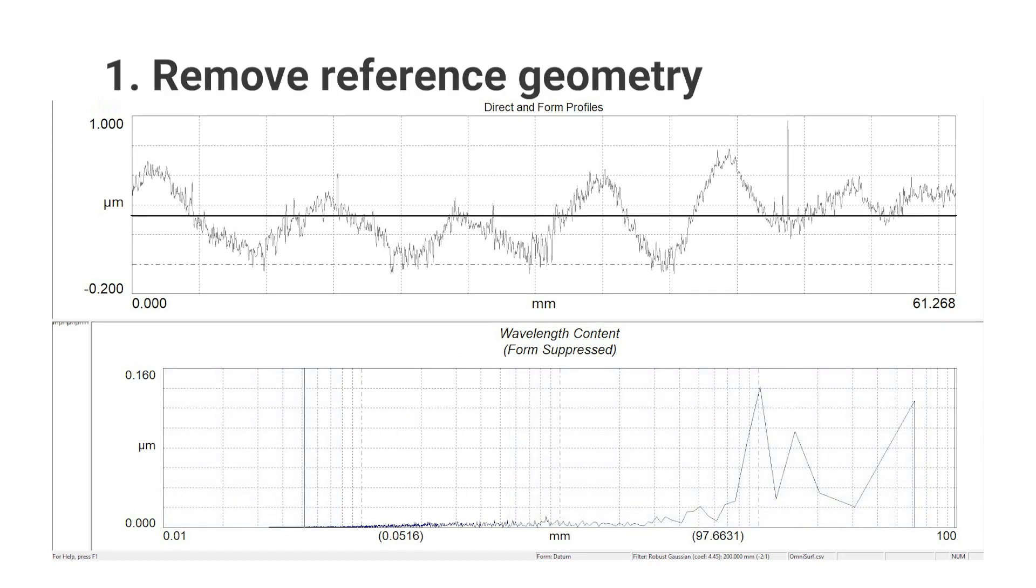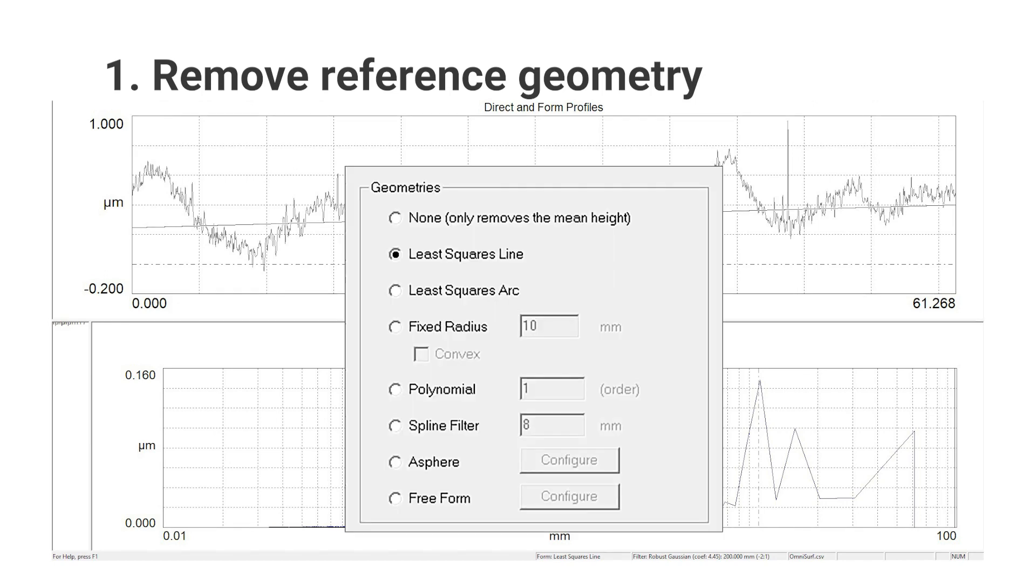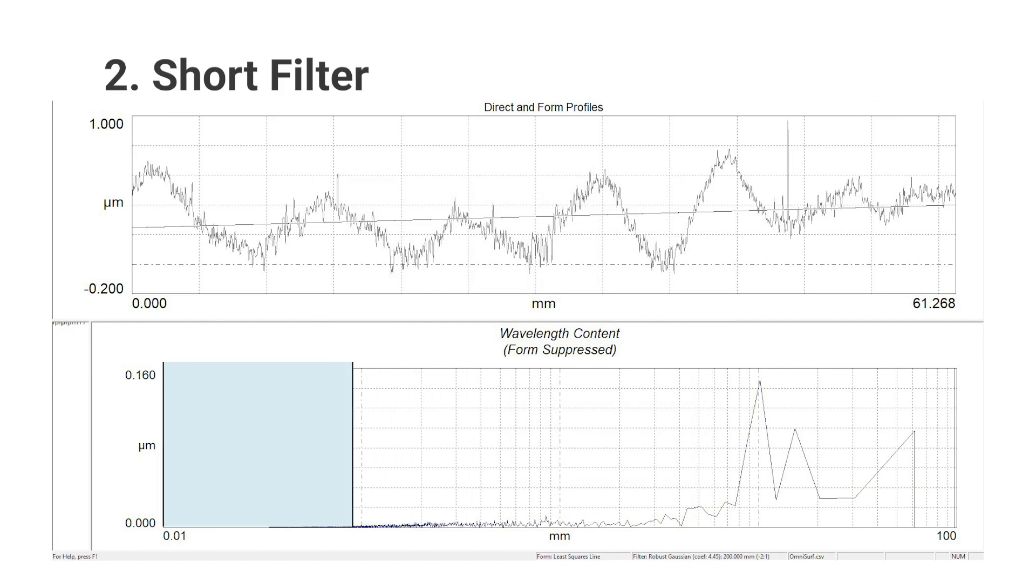First, we'll remove the largest overall shape of the surface, such as tilt or curvature. We do this by removing a reference geometry. Next, we'll filter out the very short spatial wavelengths. These might be small shapes that aren't relevant to the application, or spiky data that may be noise.